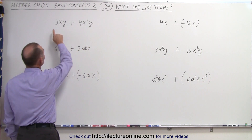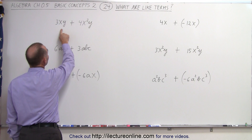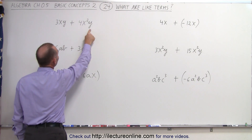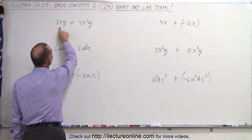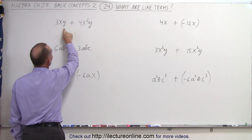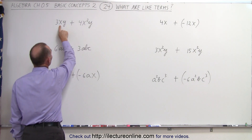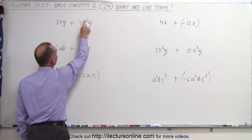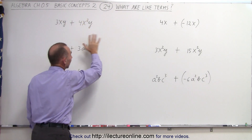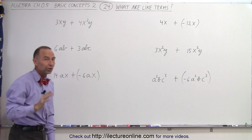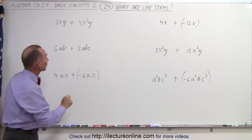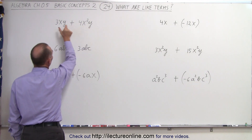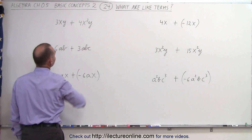Over here we have 3xy plus 4x squared y. Even though they both contain an x and a y, this x is to the first power and this x is to the second power, and therefore they are not like terms because the letter portions of these two terms are not the same.